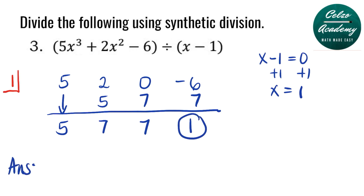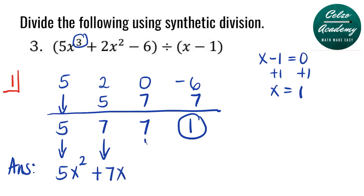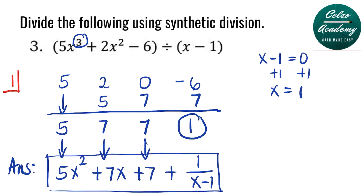The highest power of our dividend is 3, so the answer will be 1 less, which is 2. The first coefficient is 5, so we will have 5x squared. Next we have 7, so that's 7x. And the constant is 7. The remainder is 1, so we write 1 over the divisor x minus 1. So the answer is 5x squared plus 7x plus 7 plus 1 over x minus 1.